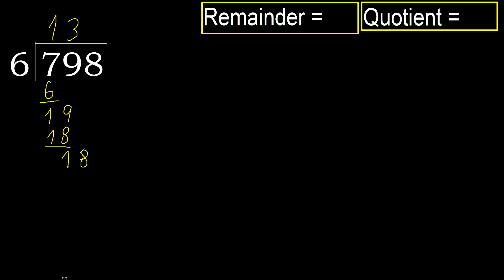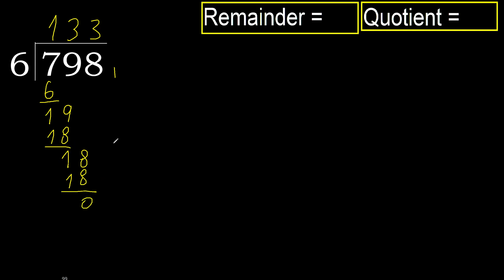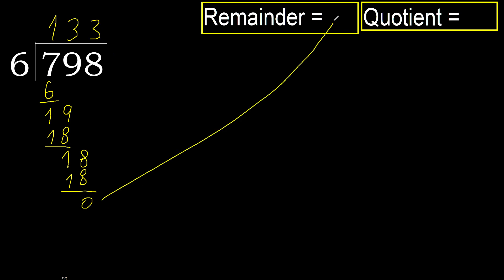Next: 18. 6 multiplied by 3 is 18, which is not greater. Subtract. Next: there is no number, therefore finish it.